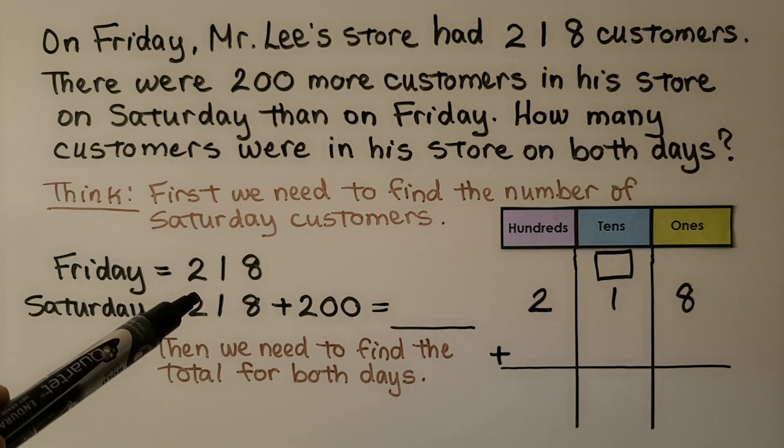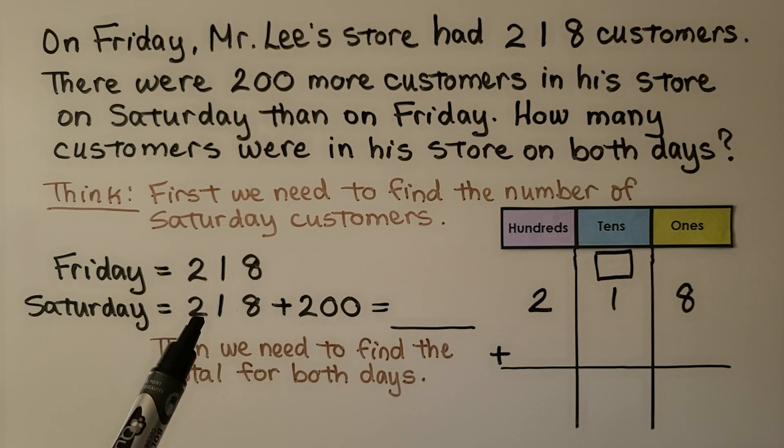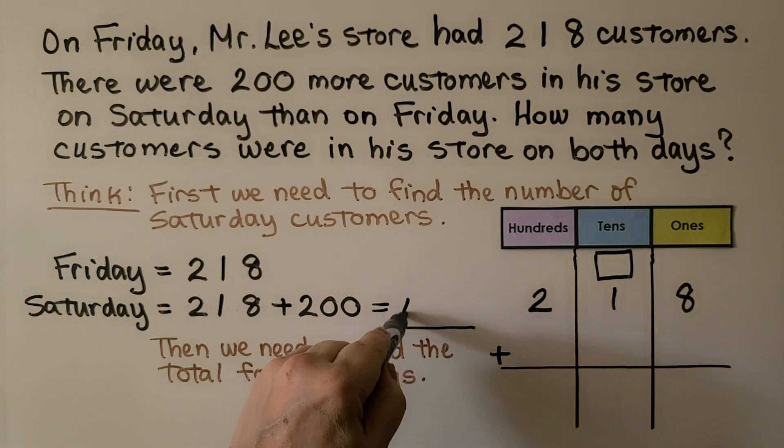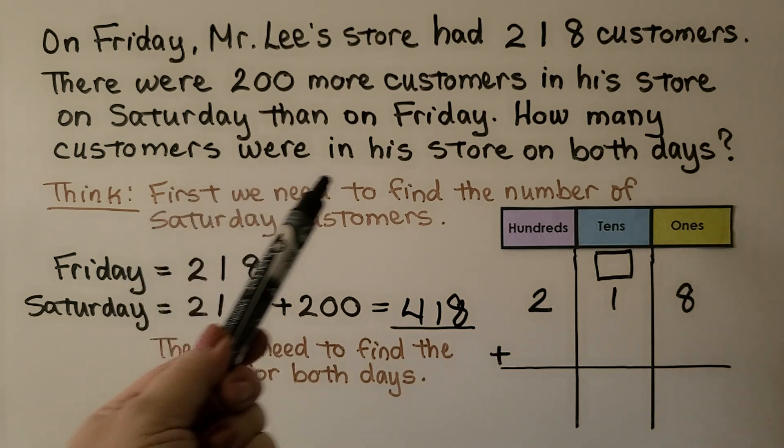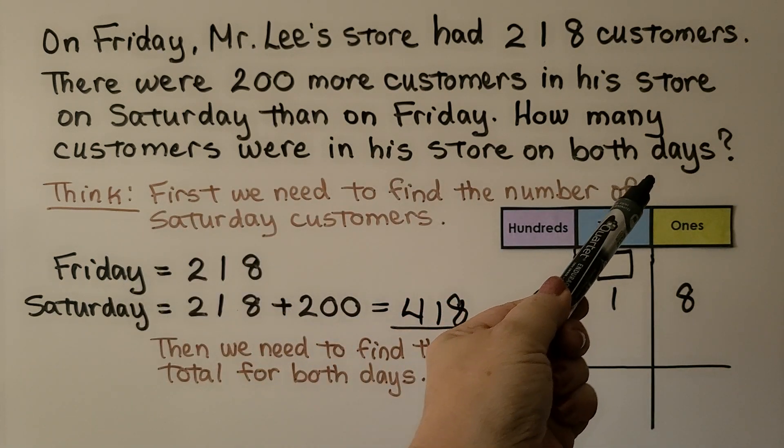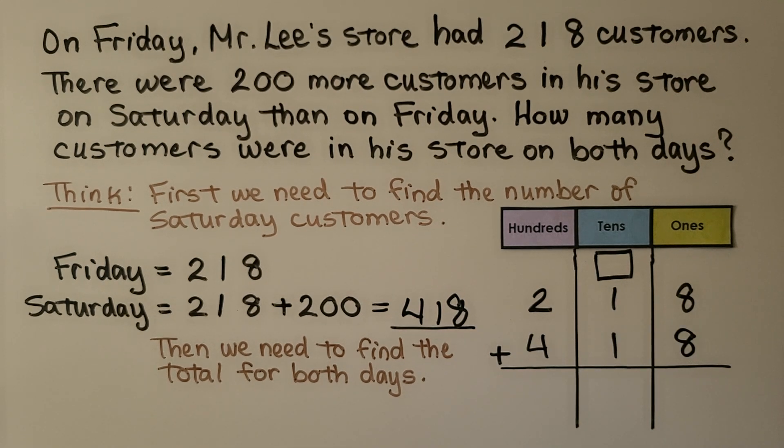Saturday is 218 and 200 more. So we need to add these two together to know Saturday. And we can use mental math. We're just adding two more hundreds. 218 plus two more hundreds is 418. It's asking us how many customers were in his store on both days. So now we know Friday is 218 and Saturday is 418. We need to find the total for both days.